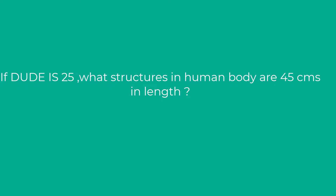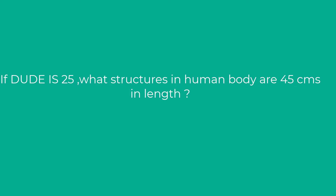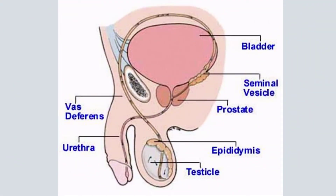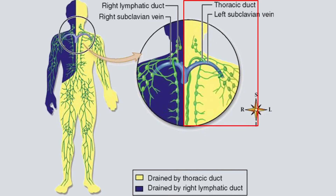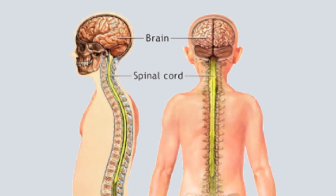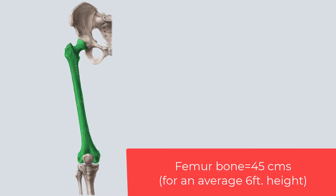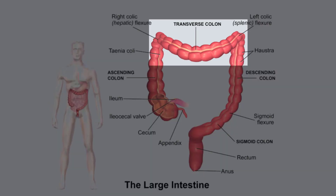Now let's talk about structures that are 45 centimeters in length. The vas deferens, part of the male reproductive system, is 45 centimeters. The thoracic duct, also called the left lymphatic duct and the largest lymphatic duct of the body, also measures 45 centimeters. The spinal cord in humans is 45 centimeters, the femur — the longest bone — is 45 centimeters for an average six-feet person, and the transverse colon is also 45 centimeters.